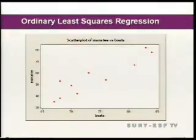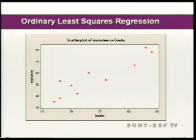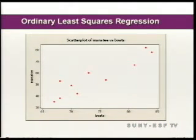This slide is a scatter plot of the number of boats as the explanatory variable and the number of manatee deaths as the response variable. Down in Florida, they were struggling with why the manatee population was decreasing. A biologist collected information on a number of variables and plotted number of boats against number of manatee deaths, revealing a positive relationship: as the number of boats increases, the number of manatee deaths increases.